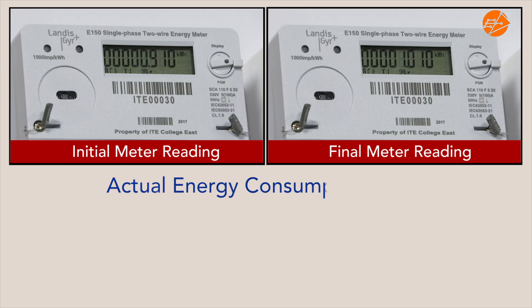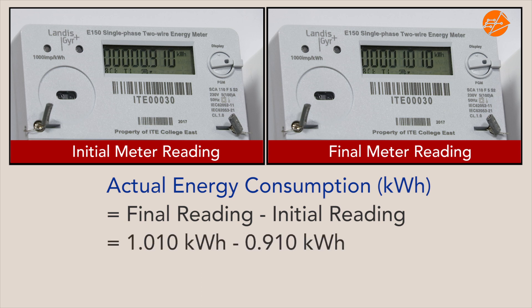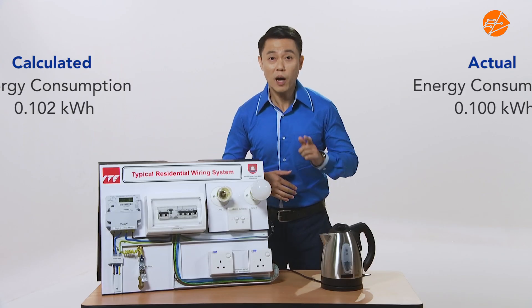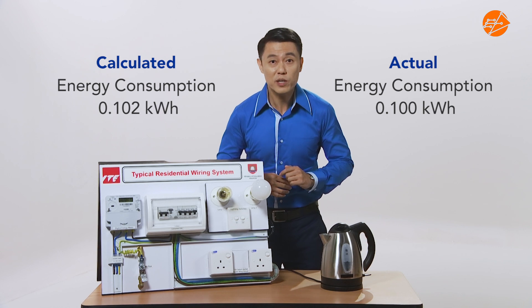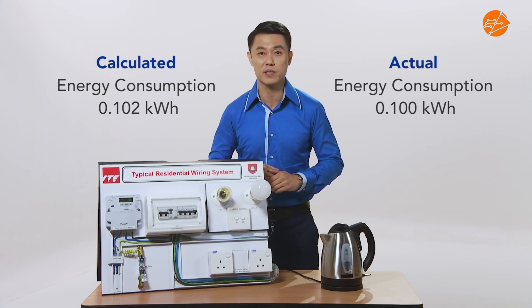Let's compare this value to the actual energy consumption using the readings from the electricity meter. The actual energy consumption is the difference between the final and initial electricity meter readings. This gives a value of 0.100 kilowatt hour. You can see that the calculated energy consumption is very close to the actual energy consumption from the electricity meter readings.